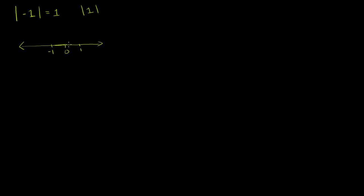On some level, absolute value is a distance from 0. But a simpler way to think of it: it always results in a positive version of the number. The absolute value of negative 7,346 is equal to 7,346. So with that in mind, let's try to solve some equations with absolute values in them.